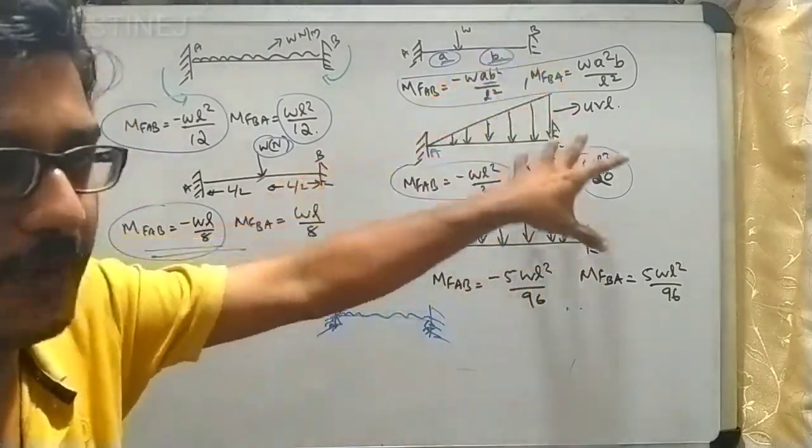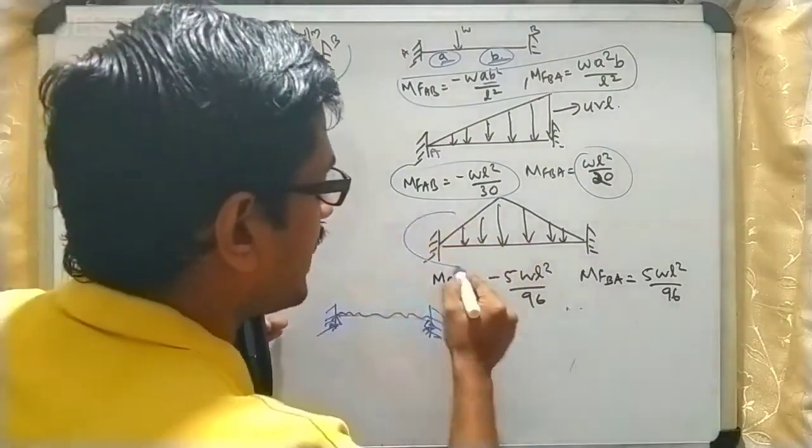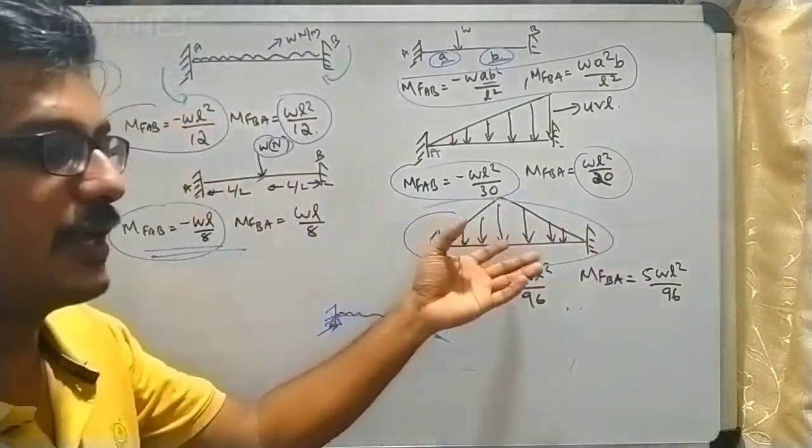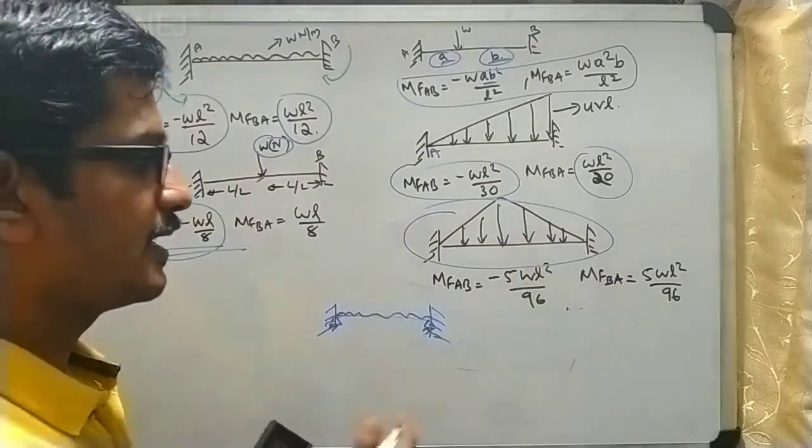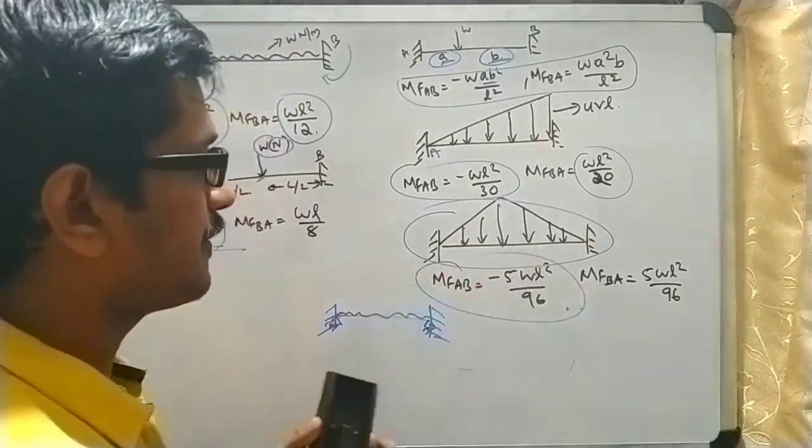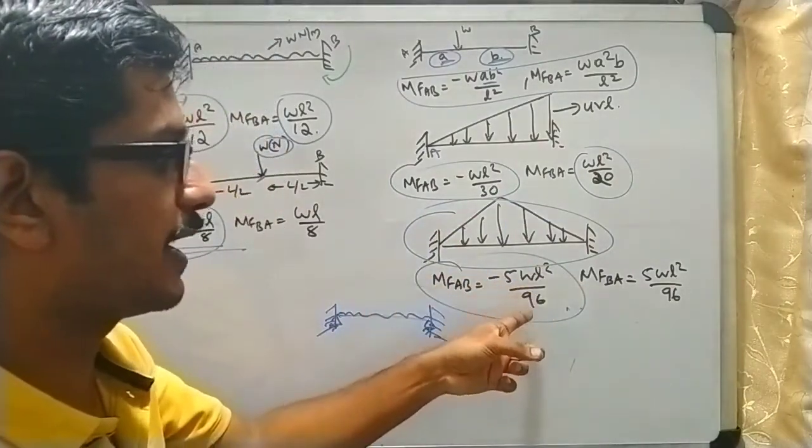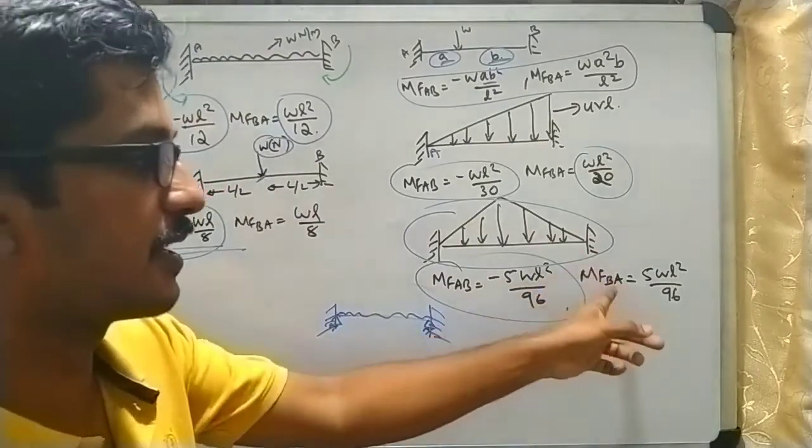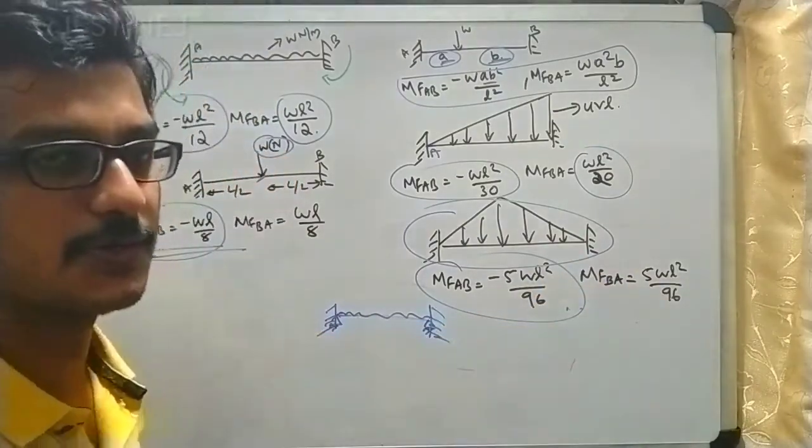Here the UVL is acting in this pattern. If the UVL is acting in this pattern, the fixed end moment value is going to be minus 5 by 96 WL square, then here positive 5 by 96 WL square. So these are the various cases which we need to work out while doing the slope deflection equations.